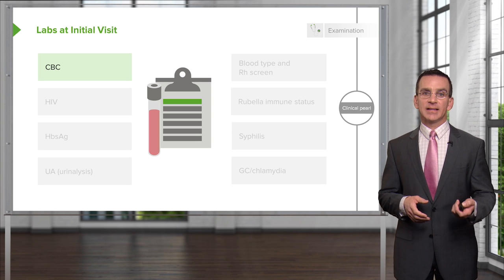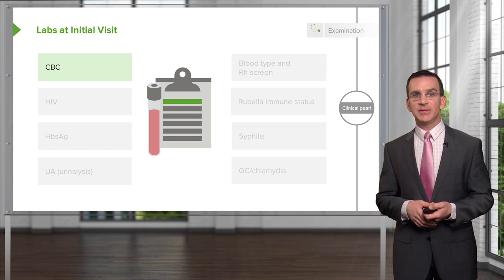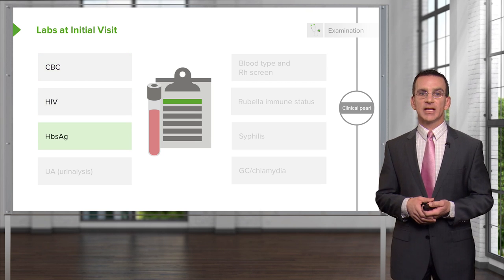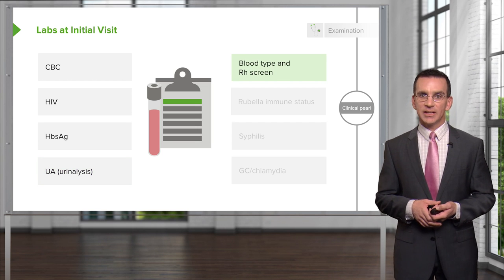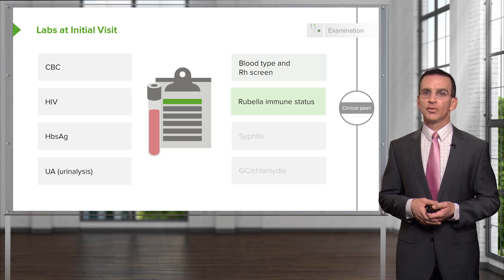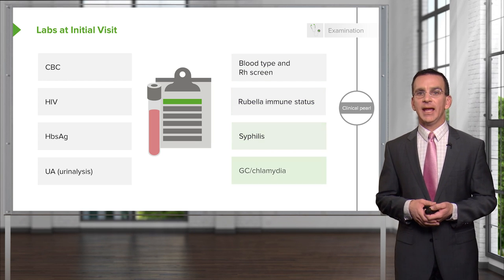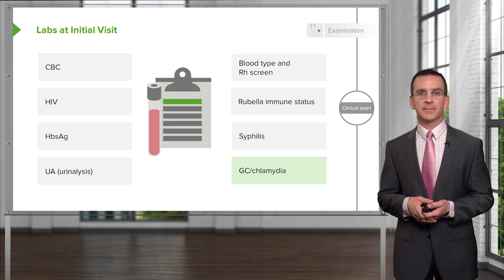At the initial visit, labs include: a CBC, an HIV test, a hepatitis B surface antigen test, a urinalysis, blood type and Rh screen for future incompatibility, rubella immune status, a syphilis test, and gonorrhea and chlamydia testing.